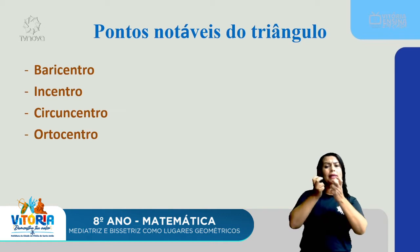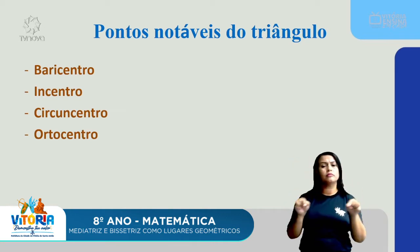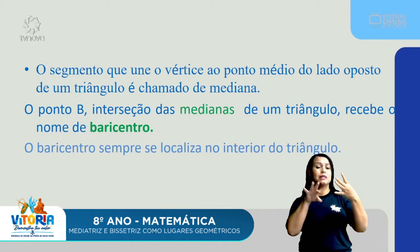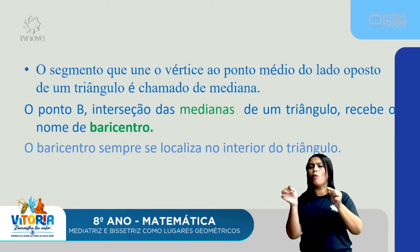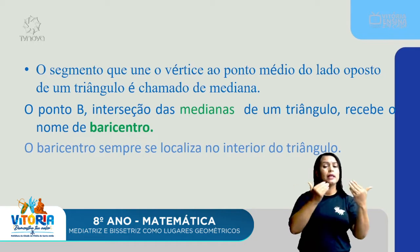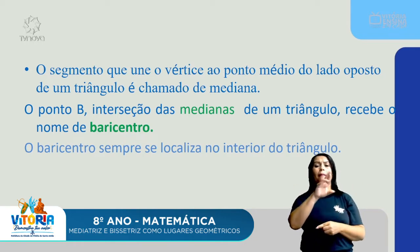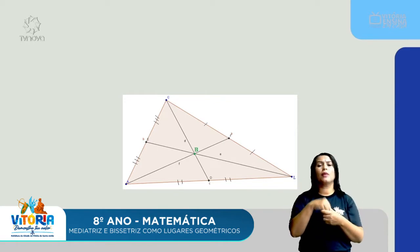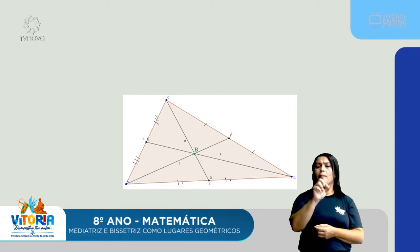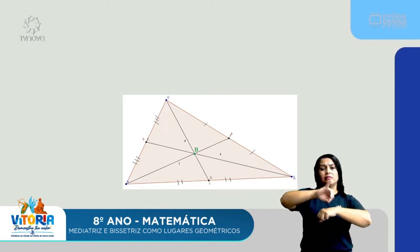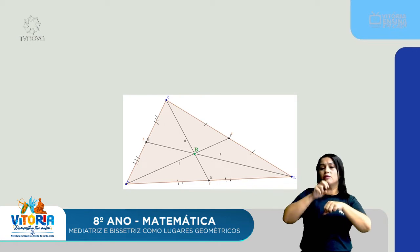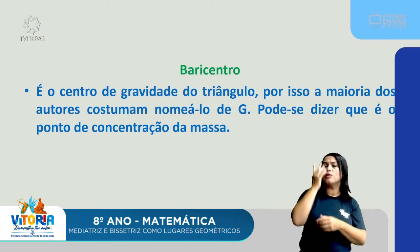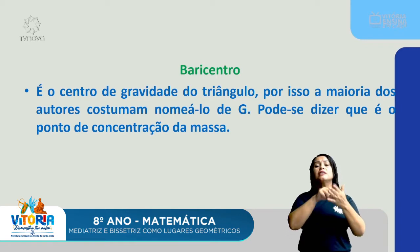Pontos notáveis do triângulo: baricentro, incentro, circuncentro e ortocentro. O segmento que une o vértice ao ponto médio do lado oposto de um triângulo é chamado de mediana. O ponto de interseção das medianas recebe o nome de baricentro. O baricentro sempre se localiza no interior do triângulo — é o centro de gravidade do triângulo, e por isso a maioria dos autores o nomeia de ponto G.